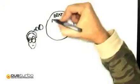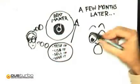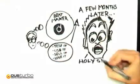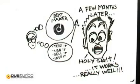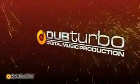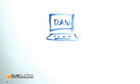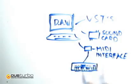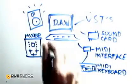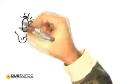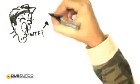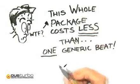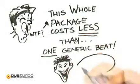We initially built this as an introductory tool for people getting into beat production on a small scale. Since then, we've outgrown our own vision and Dub Turbo has quickly become a mini powerhouse in the beat production space. What used to cost thousands — meaning a supercomputer, big-name DAW software, VSTs, pro sound card, MIDI interface and keyboard, samples and kits, monitors, a mixer, wires, and more — is now all available for less than the cost of just one average royalty-free beat or kit.